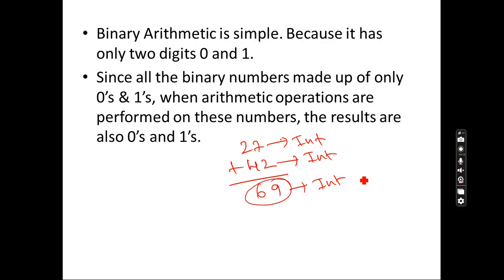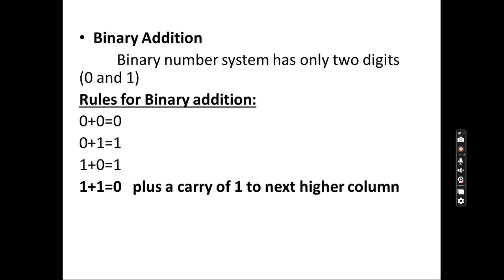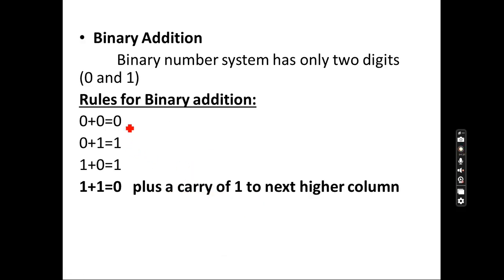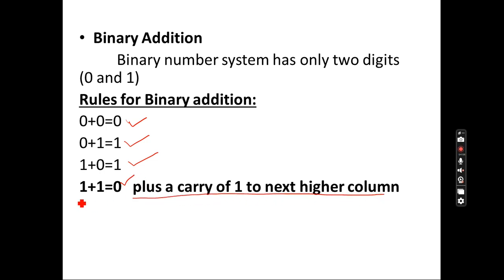In the next video I'll show how to perform addition and subtraction on binary numbers. Here I'm explaining the rules of binary arithmetic. The addition rules are: 0 + 0 = 0; 0 + 1 = 1; 1 + 0 = 1; and 1 + 1 = 0 with a carry. This last rule is very important — please remember it.